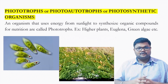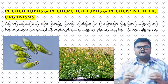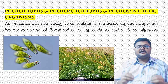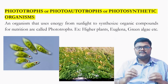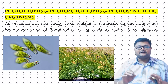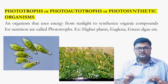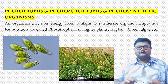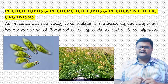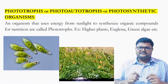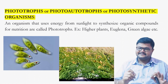The next topic is photoautotrophs, phototrophs, or photosynthetic organisms. The organisms which utilize sunlight as a major source of energy to produce food are called photosynthetic organisms. These are also called phototrophs. For example, higher forms of plants, Euglena, green algae, etc.